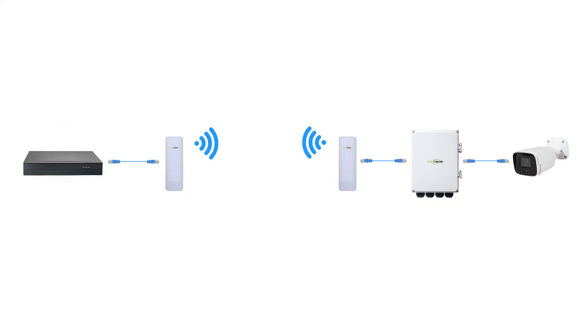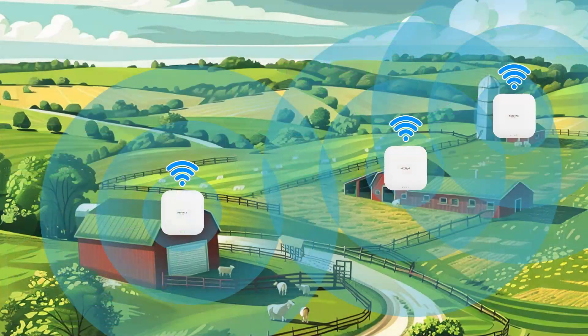So how do we bring the internet to such vast spaces? Remember in the last video, we had a wireless bridge setup. By installing a wireless access point into this setup, we can now broadcast a Wi-Fi signal across the farm, ensuring that every corner is covered.